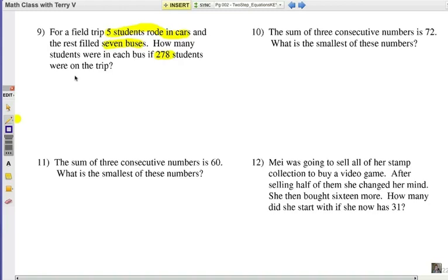Five students rode in cars. So we start with five students and then we're going to add in seven buses. Now I'm going to say B stands for students in each bus. We're going to assume that each bus fills the same number of students. So seven bus loads of students plus five additional students in cars gives you a total of 278.